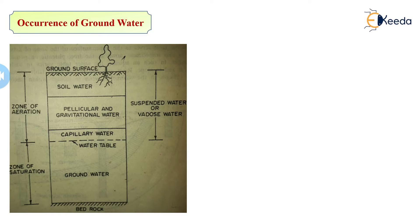Through the pervious layer down to the impervious layer, the zone that stores and transmits water as groundwater is called the zone of saturation. Above the ground surface up to the capillary or water level, it is also called suspended water. This is the occurrence of groundwater.